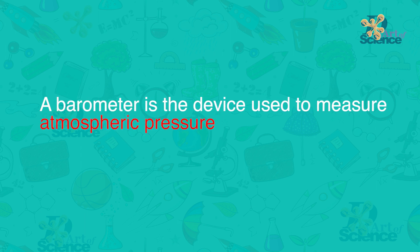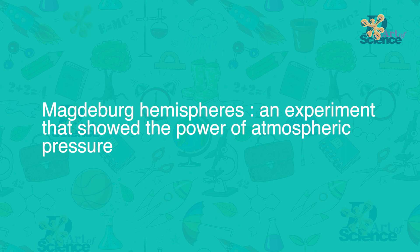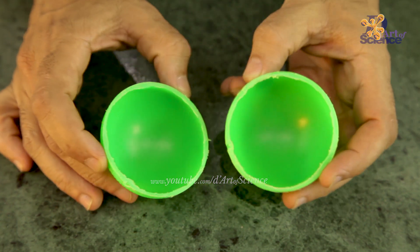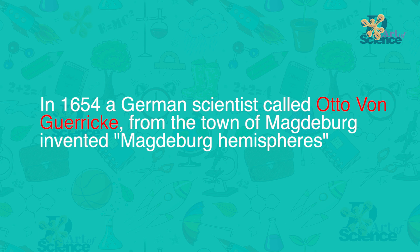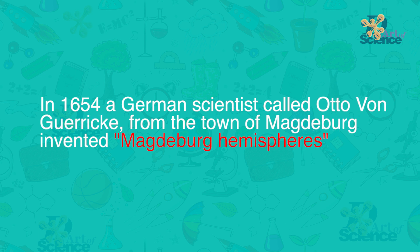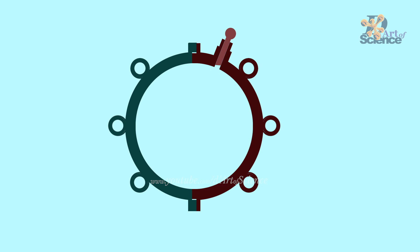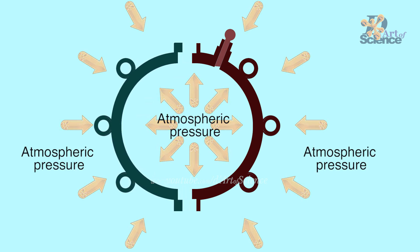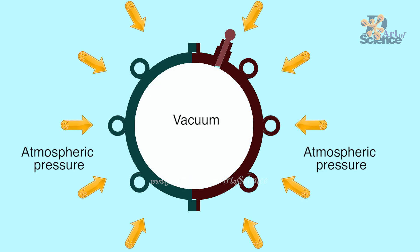Let's also see the Magdeburg hemispheres, an experiment that showed the power of atmospheric pressure. A sphere is a fully round object like a ball; if you cut it in half you get two hemispheres. In 1654, a German scientist called Otto von Görig from the town of Magdeburg created special metal hemispheres with hooks on the domes that could fit onto each other without letting any air escape. When you put them together, you could pull them apart easily because air inside also exerted pressure. But once the air was pumped out, the hemispheres locked so tight that 16 horses could not pull them apart.